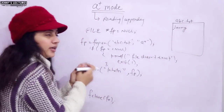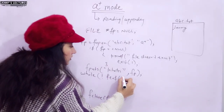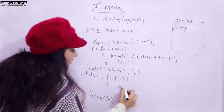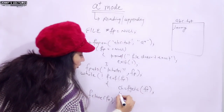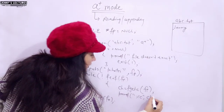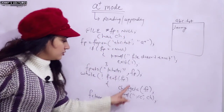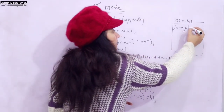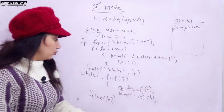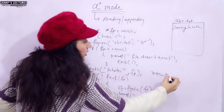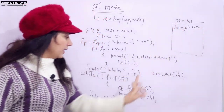After appending, if you want to read, you write a loop using feof(fp) and fgetc(fp) to read character by character and print each character. But after appending 'khatri', the cursor is at the end of the file. To read from the beginning, the cursor must move back. So you use the rewind function — rewind(fp) — which we discussed in the previous video. Now the cursor moves from the end back to the beginning, and after that you can read. So 'jenny khatri' would be printed.